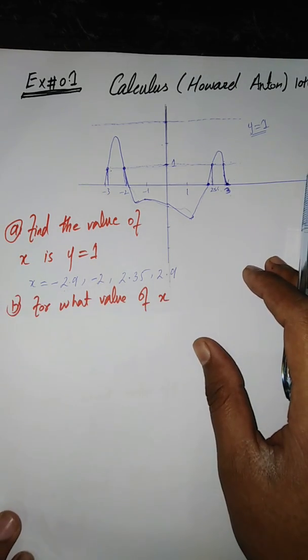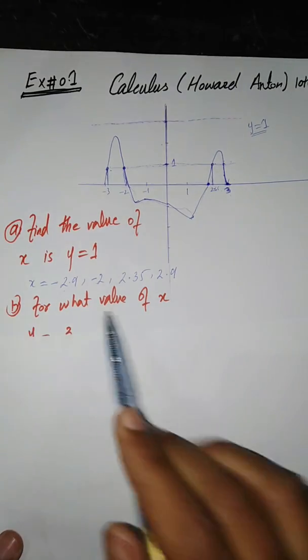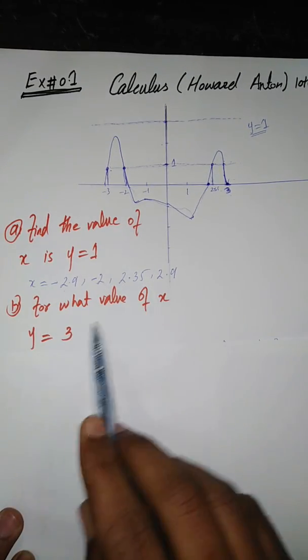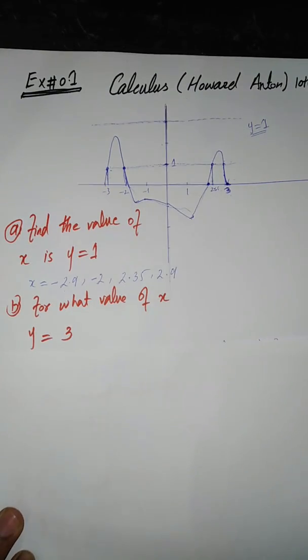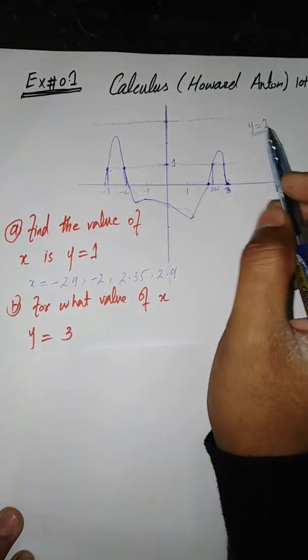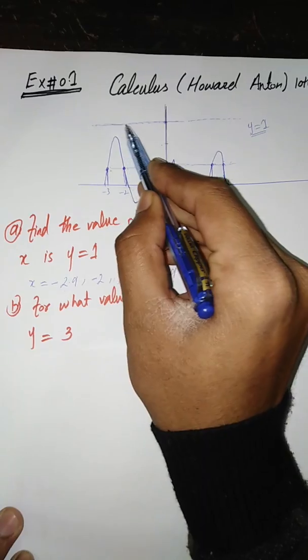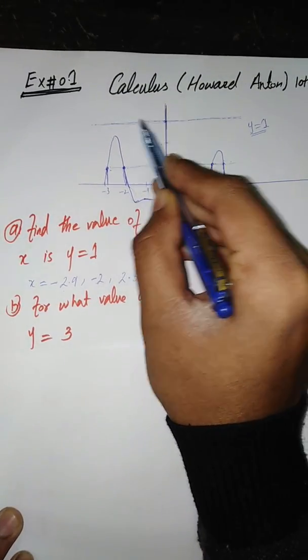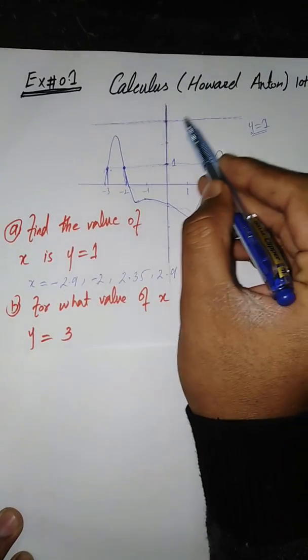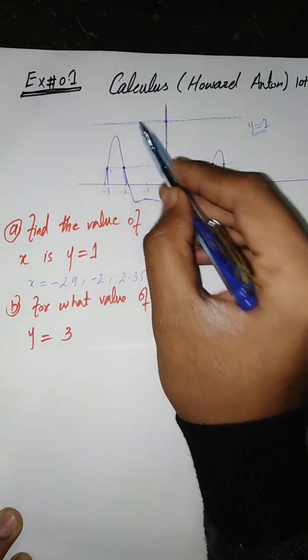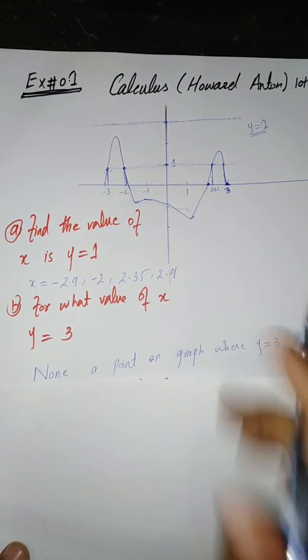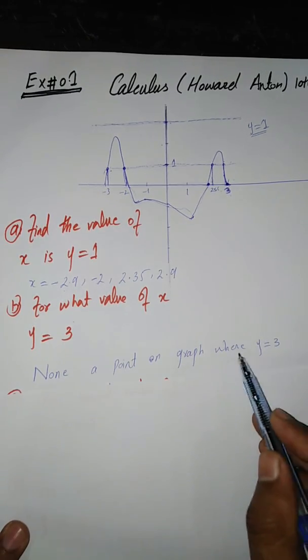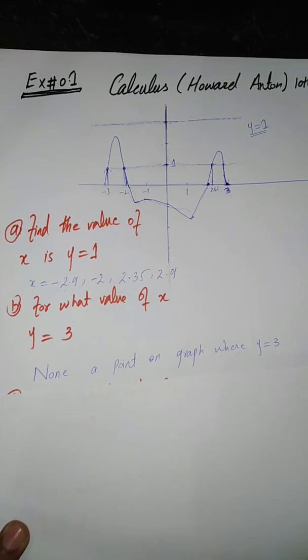The second part of this question is for what value of X, Y equals 3. In this part we have to find the values of X where Y is 3. So I draw a line for Y equals 3. This line cannot intercept at any point of this graph. So there is no such value of X where Y is 3. There is no point on the graph where Y equals 3.